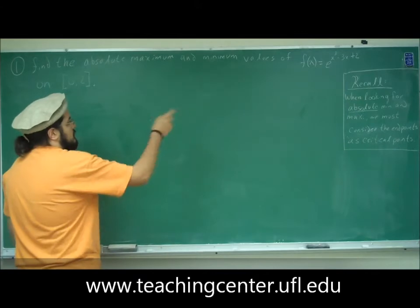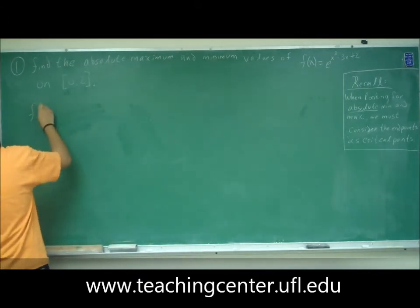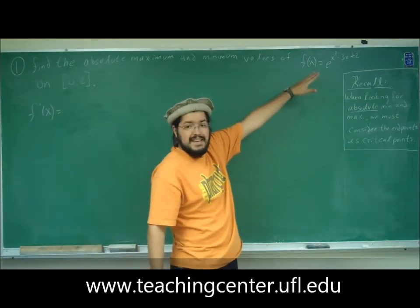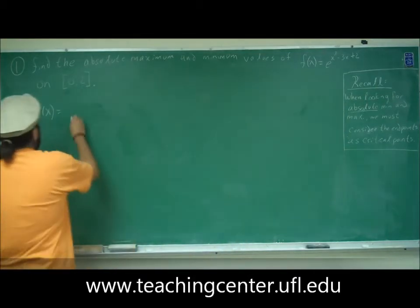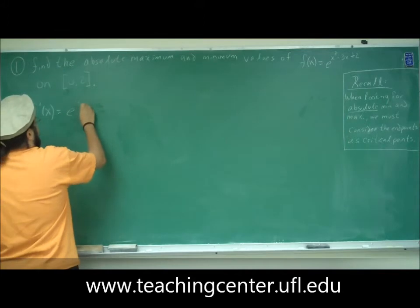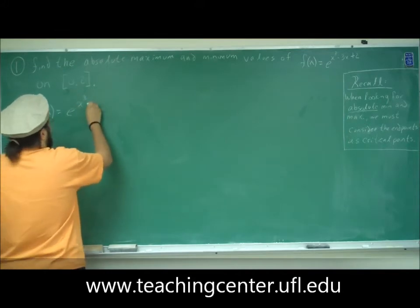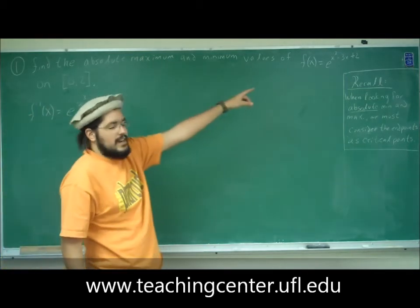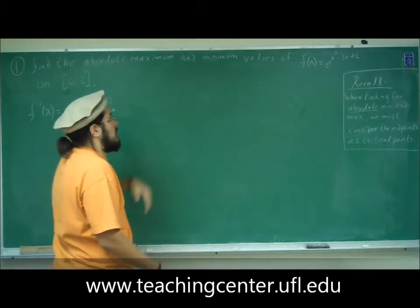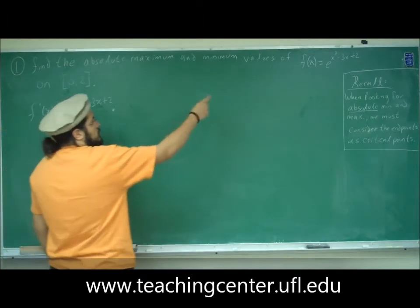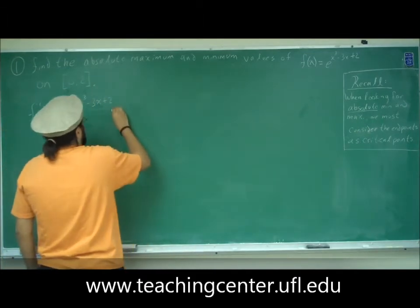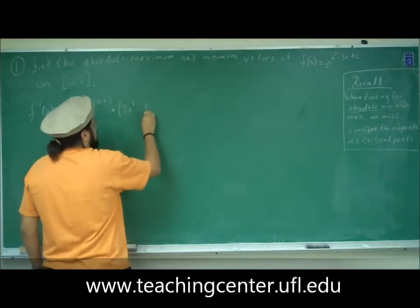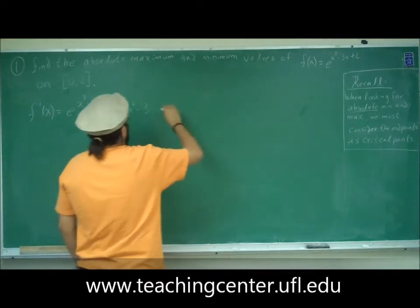First we need to find the first derivative. The derivative of e raised to anything is e raised to that same thing. So that's e^(x³ - 3x + 2) times the derivative of the exponent polynomial. Using the power rule, the derivative of x³ - 3x + 2 is 3x² - 3. So f'(x) = e^(x³ - 3x + 2) · (3x² - 3).